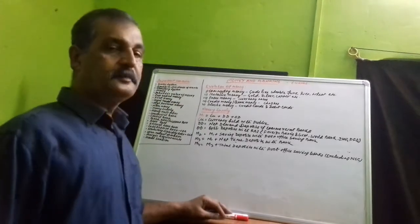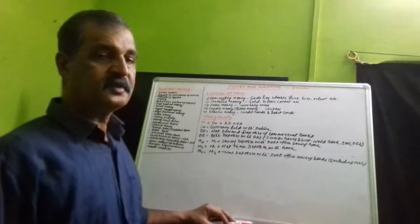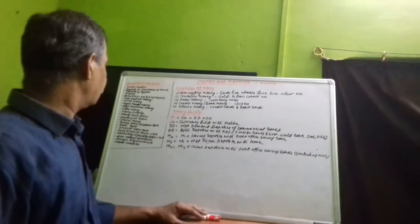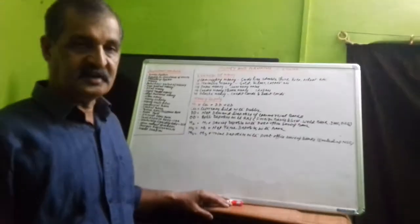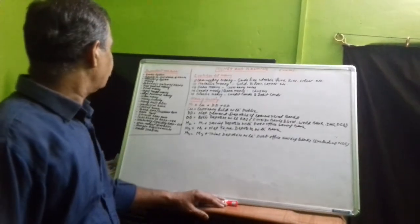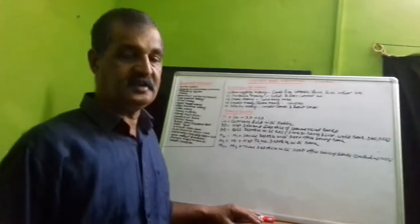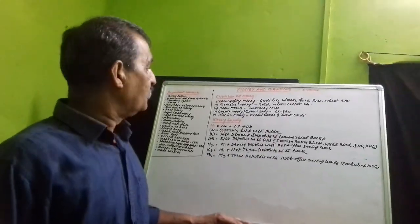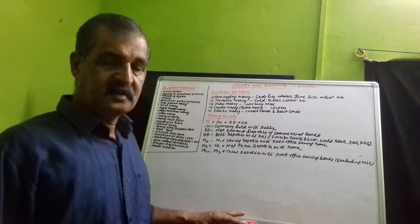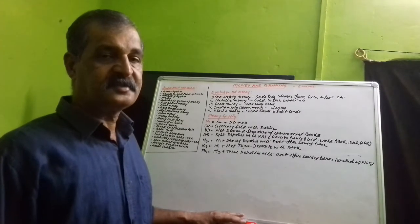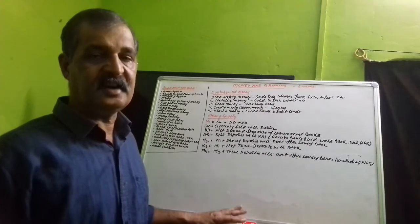We talked about the barter system of exchange, problems of the barter system, meaning of double coincidence of wants, monetary system of exchange, and functions of money in short. Today we will discuss other important concepts related to this chapter — that is money and banking.